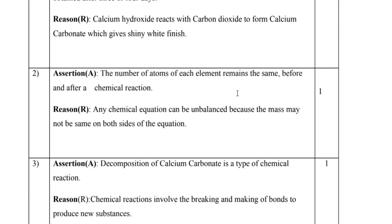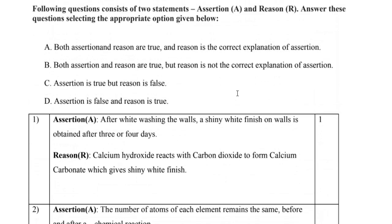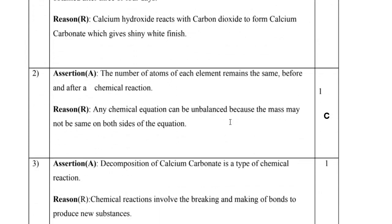Question 2: The number of atoms of each element remains the same before and after a chemical reaction. The reason given is that any chemical equation can be unbalanced because the mass may not be the same on both sides. Since the assertion is true but the reason is false, C is the answer for question 2.